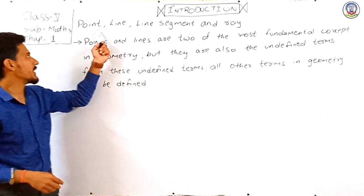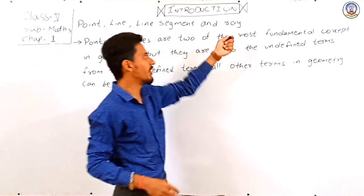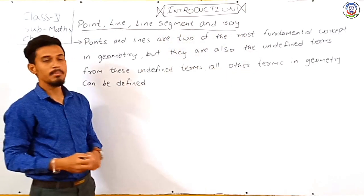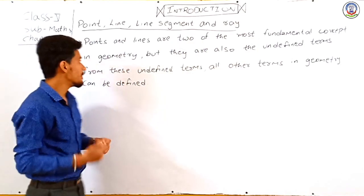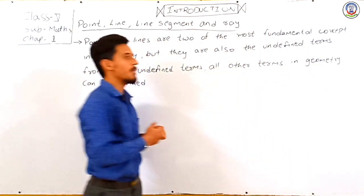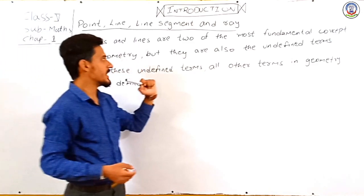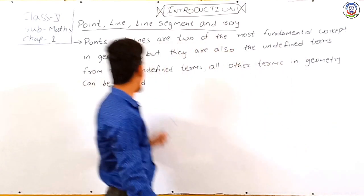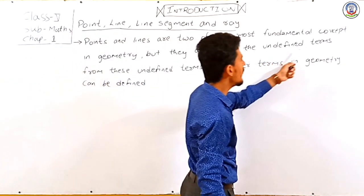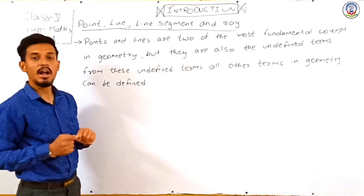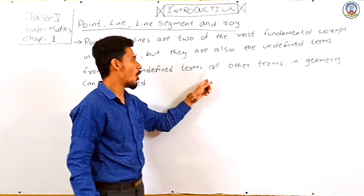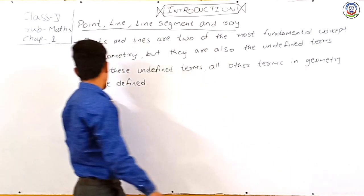Our next topic is point, line, line segment, and ray. Points and lines are two of the most fundamental concepts in geometry, but they are also the undefined terms. These are called undefined terms because they are not defined by a definition. From these undefined terms, all other terms in geometry can be defined.